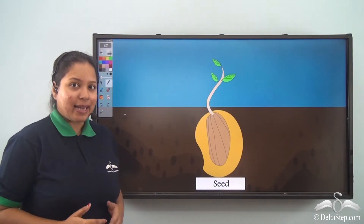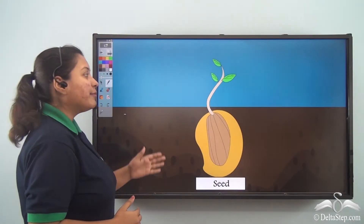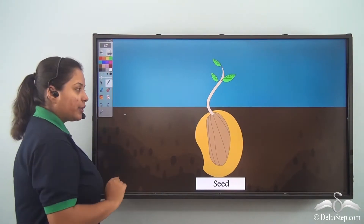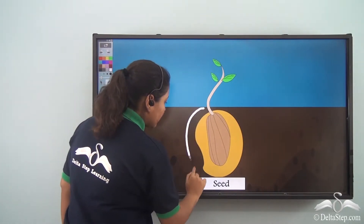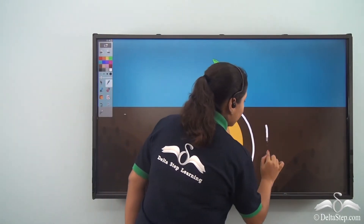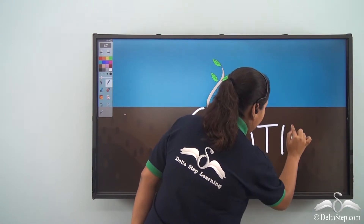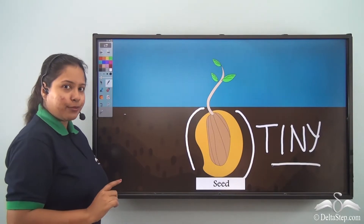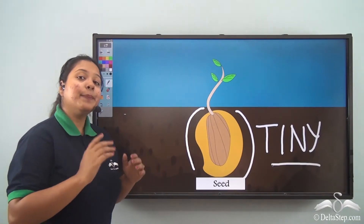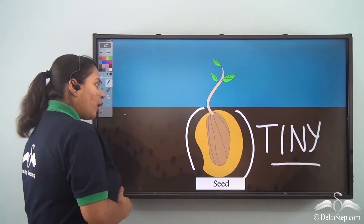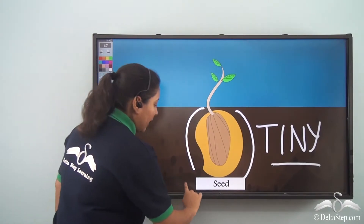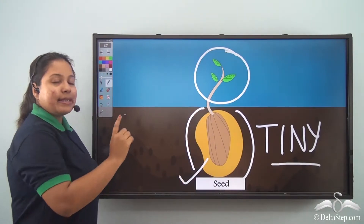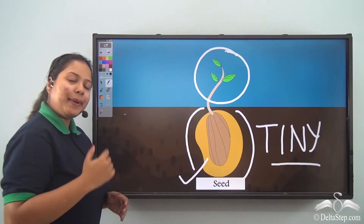"I am very tiny tiny and I am a seed. I am very useful to the plant as I have a new tree." This is a seed — one of the tiny parts of a plant. But don't think it is not useful; it is very very important. Do you know why? Because inside this seed is a new plant. Seed is very very important to a plant.